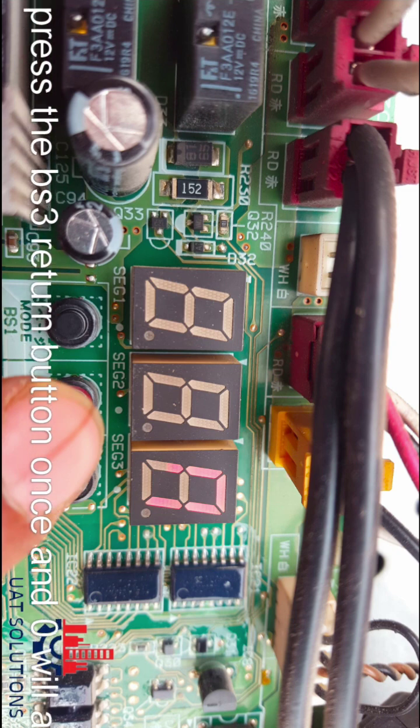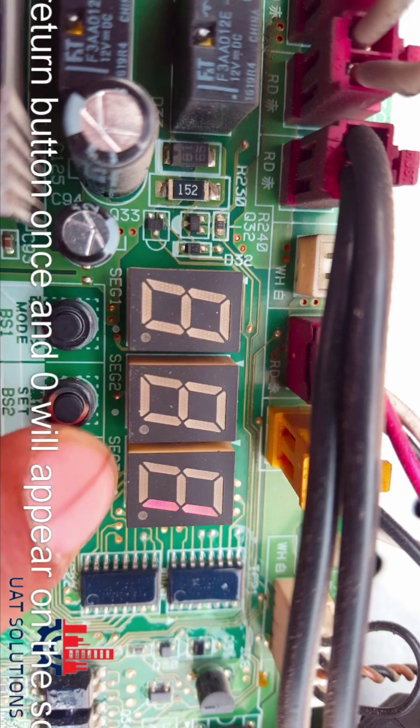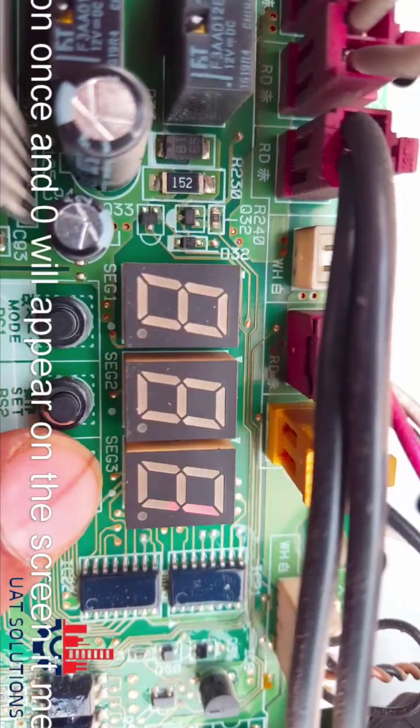Press the BS2 set button once, and zero will change to one.